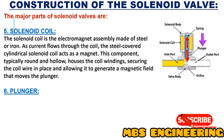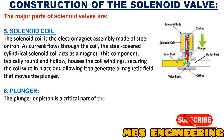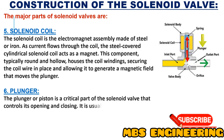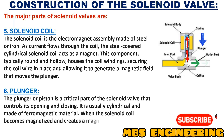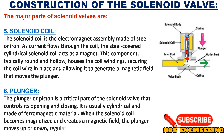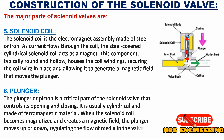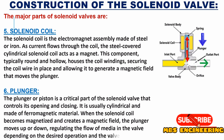The sixth part is the plunger or piston, a critical part of the solenoid valve that controls its opening and closing. It is usually cylindrical and made of ferromagnetic material. When the solenoid coil becomes magnetized and creates a magnetic field, the plunger moves up or down, regulating the flow of media in the valve depending on the desired operation and the valve's mechanism.